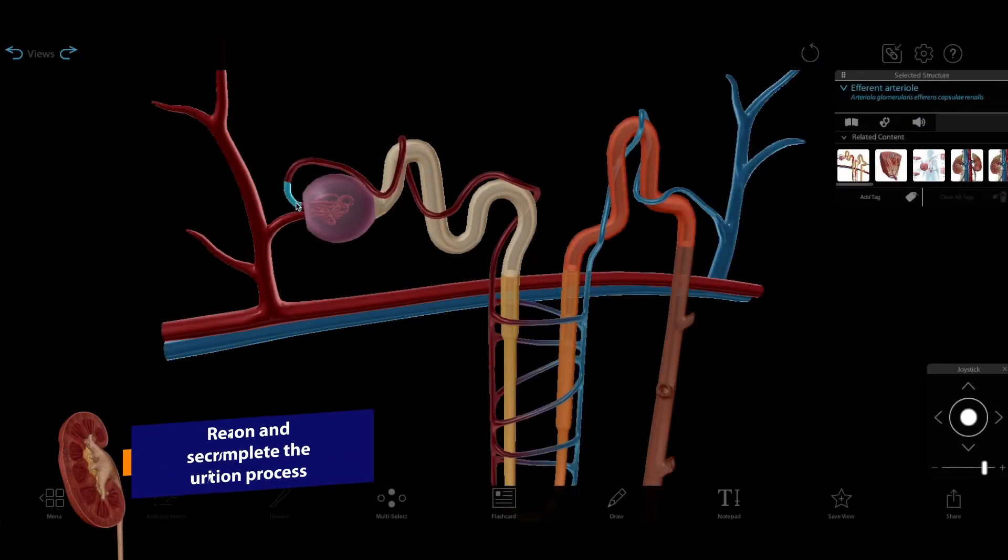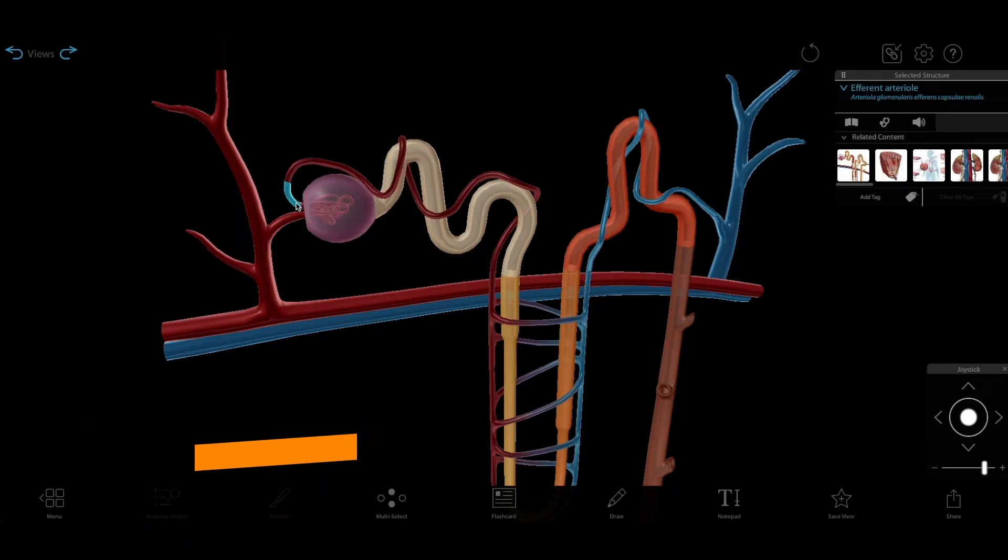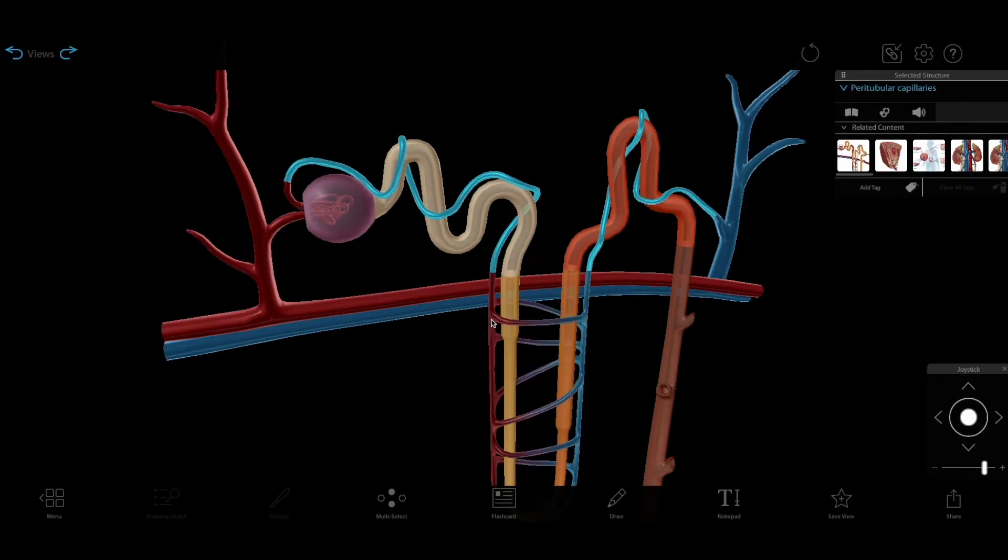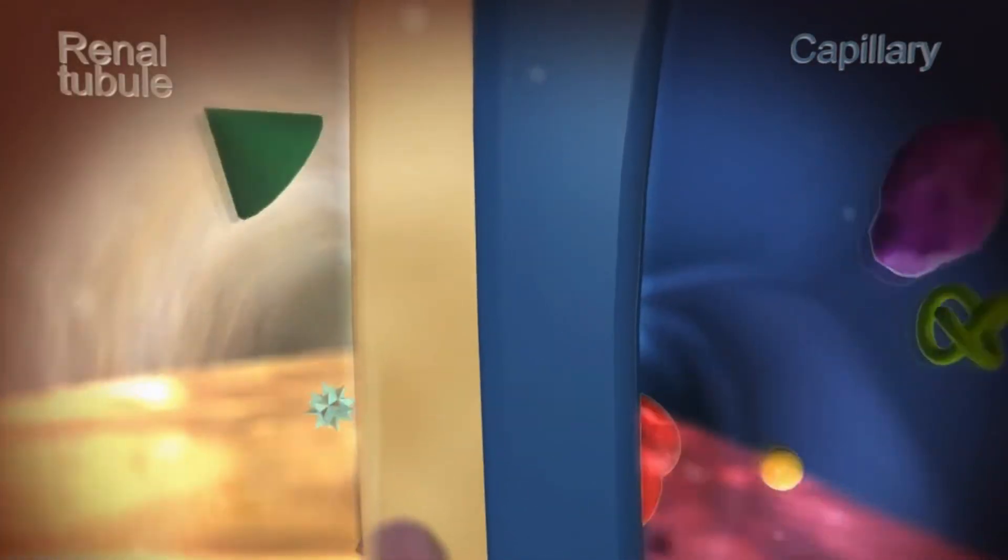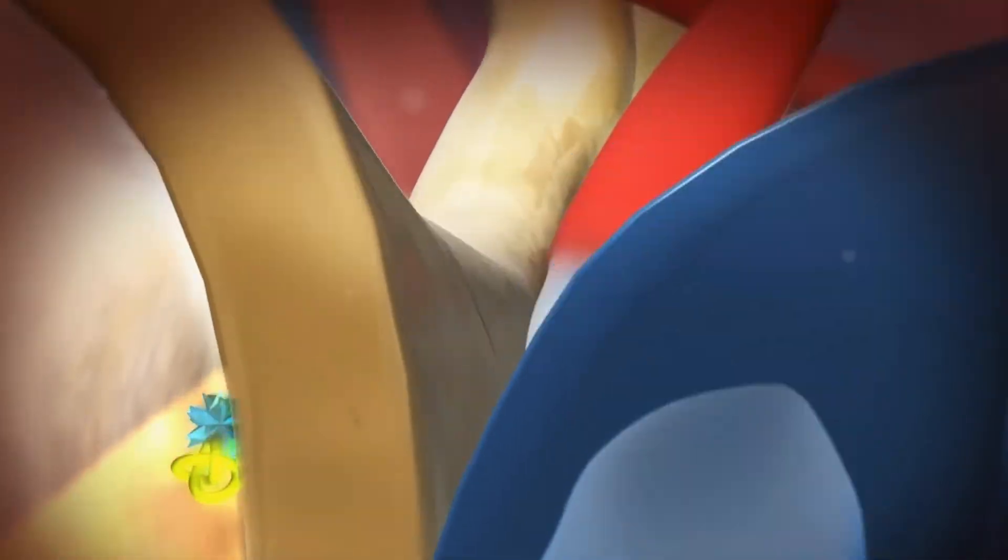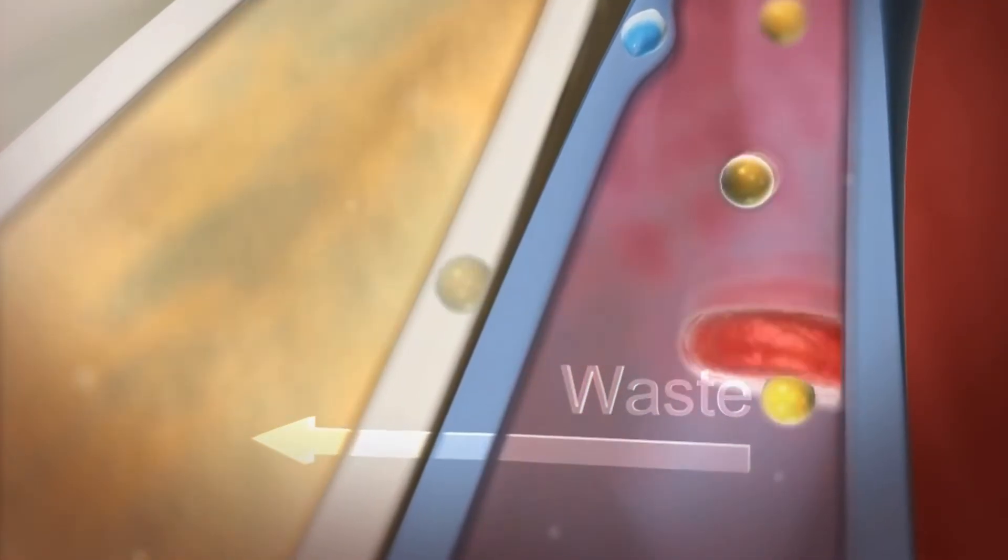From the glomerulus, the filtered blood passes into an efferent arteriole and then through another network of small blood vessels, the peritubular capillaries and vasa recta. Here, water and solutes are reabsorbed into the blood, and additional waste and hydrogen ions pass into the filtrate flowing through the renal tubules. The filtrate becomes urine.